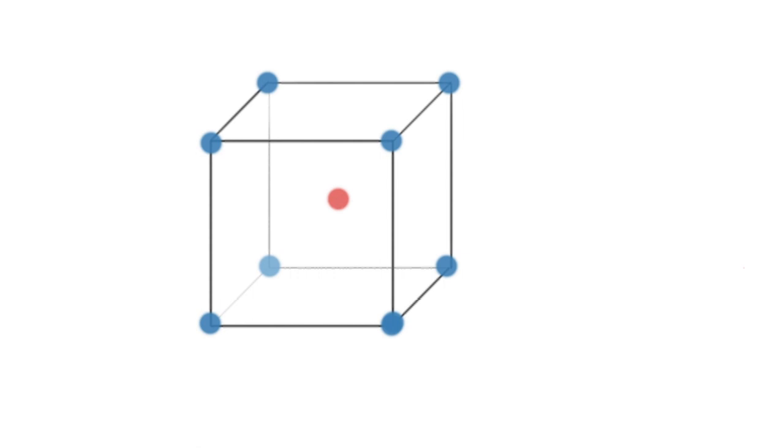And what we want to figure out, we want to try to solve for what's this radius ratio of the size of the cation to the size of the anion.